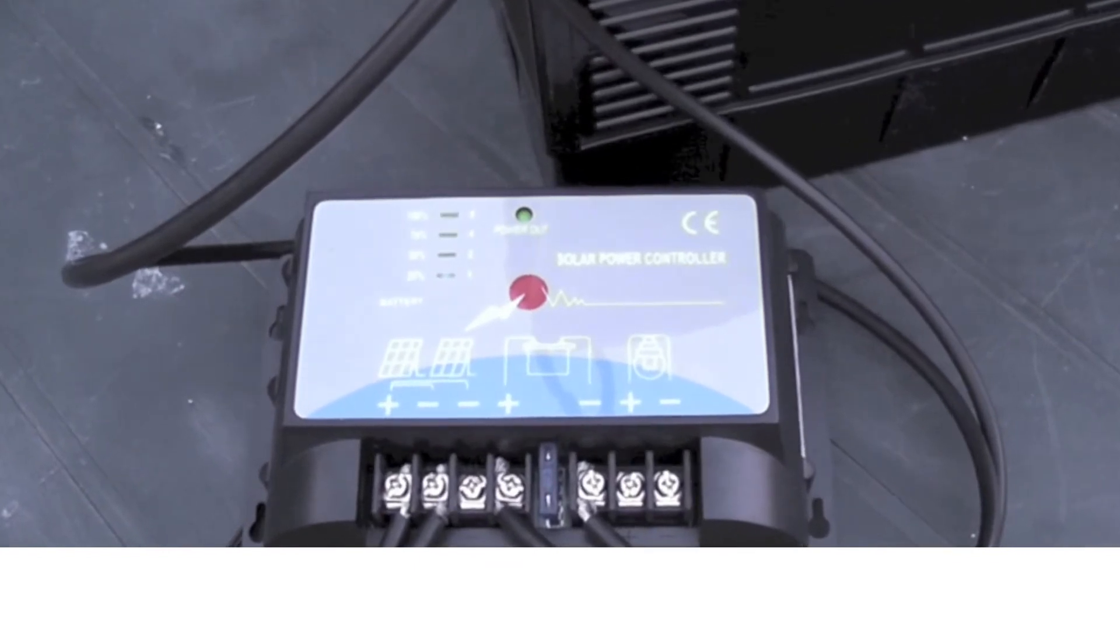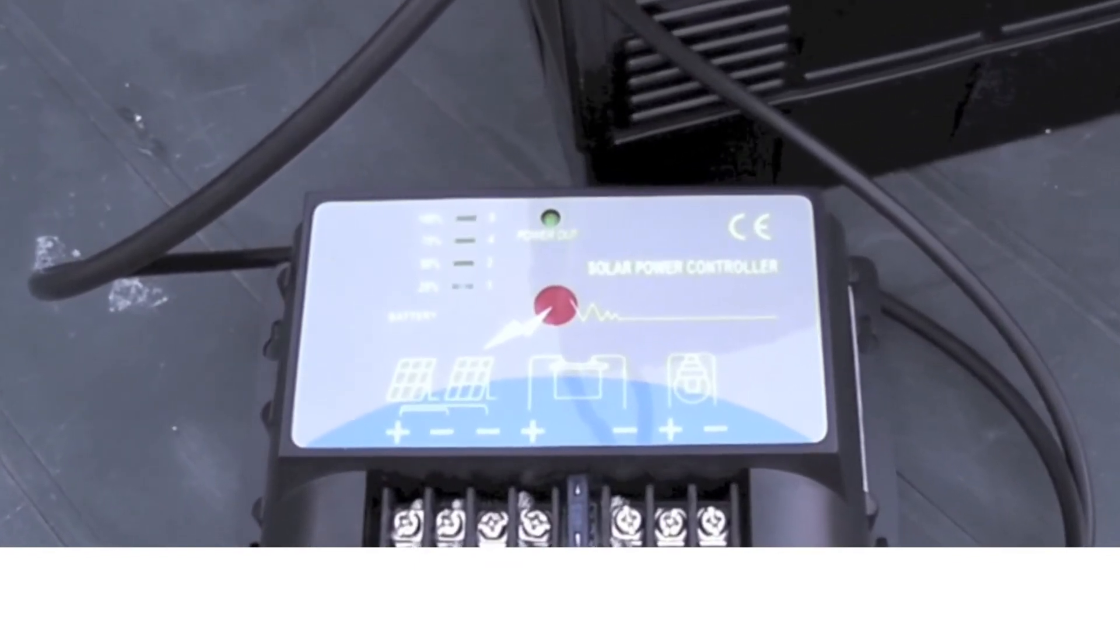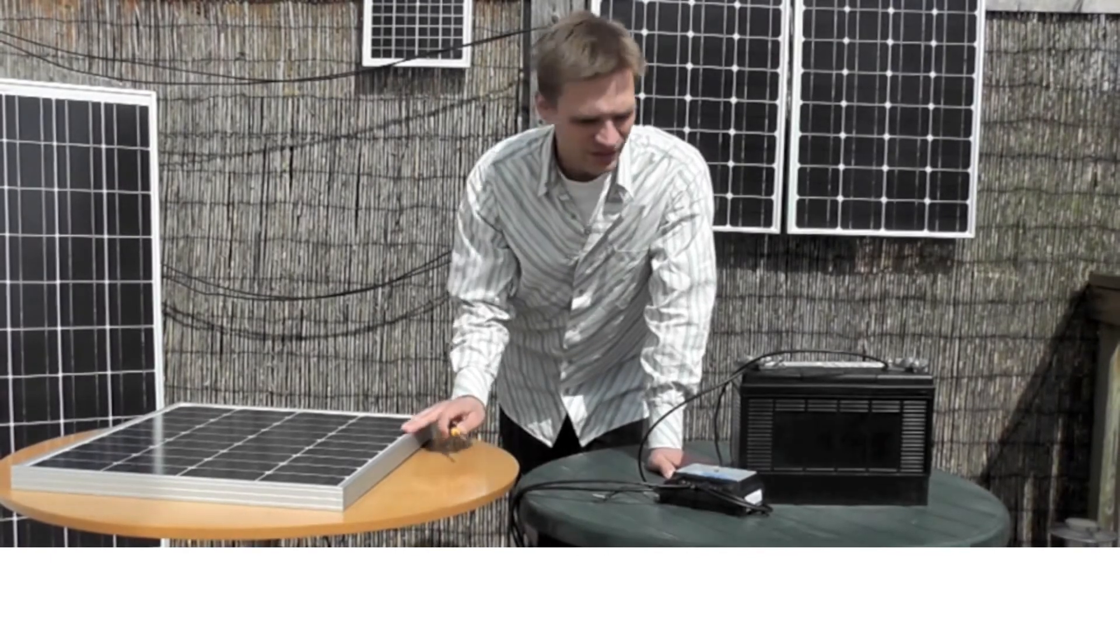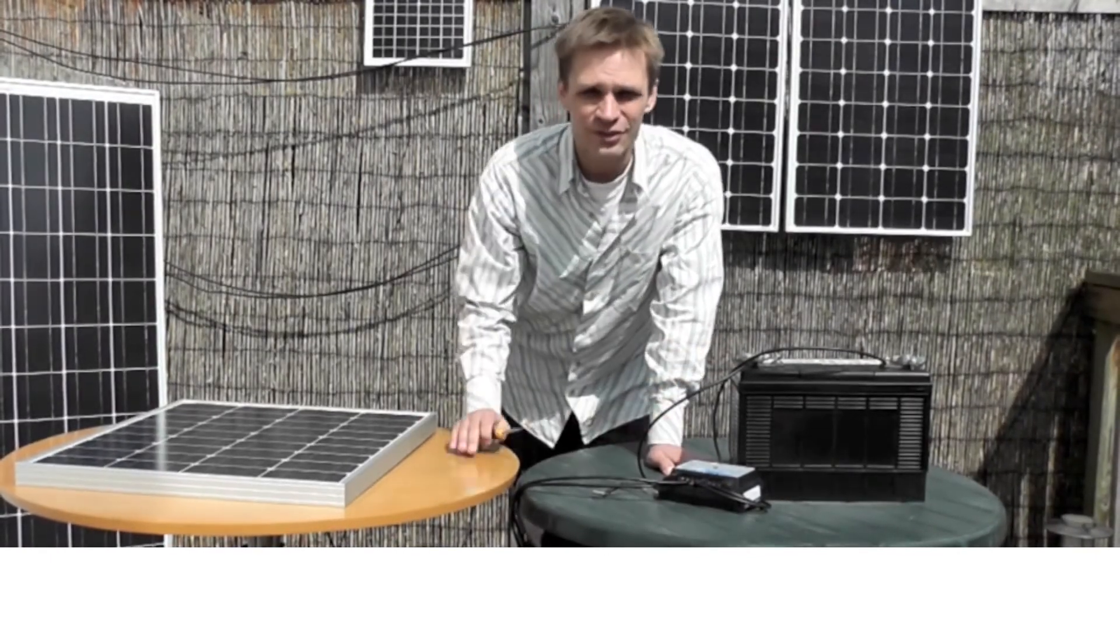And you can see the light cycling upwards, which shows it's charging. And that's it. Your panel is now charging your battery via your charge controller.